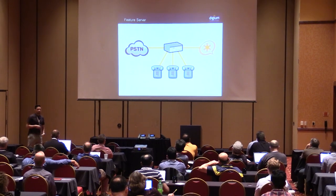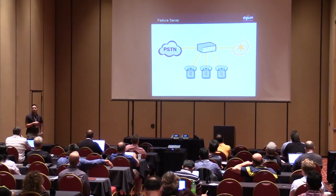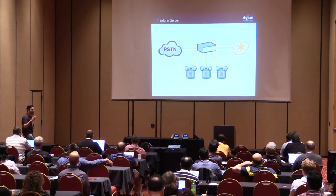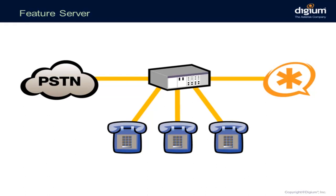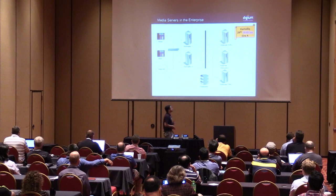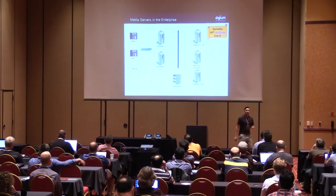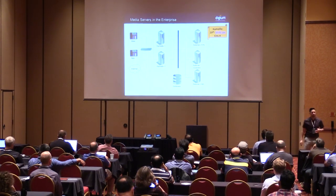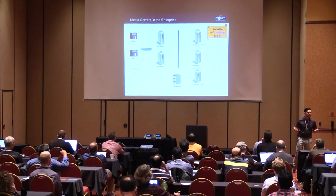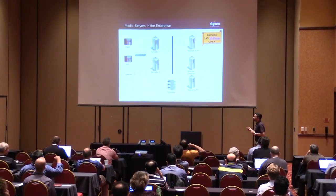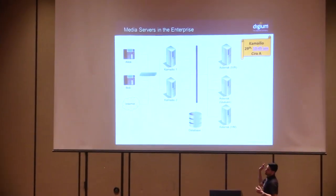Asterisk is often used as a feature server. Maybe you have a Nortel or Panasonic PBX and don't want to change it, but you need IVRs, call queues, call recording — features not available in your traditional PBX. You can do that with Asterisk. And Asterisk is not only for small and medium businesses; it's often seen at enterprise level with Kamailio or OpenSIPS servers working as proxies doing load balancing, with multiple Asterisk servers handling features: one for IVR, one for queues, one for voicemail.